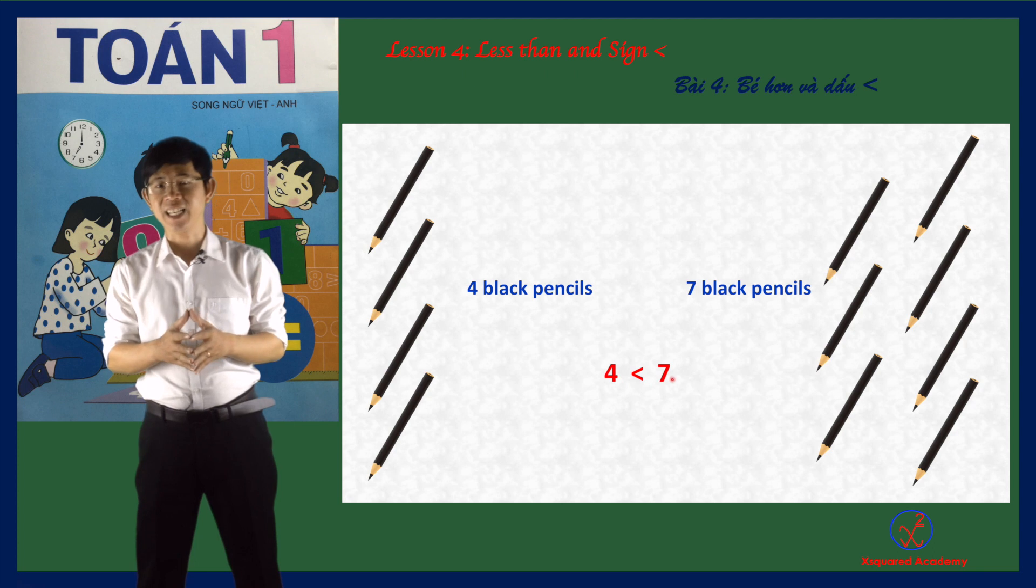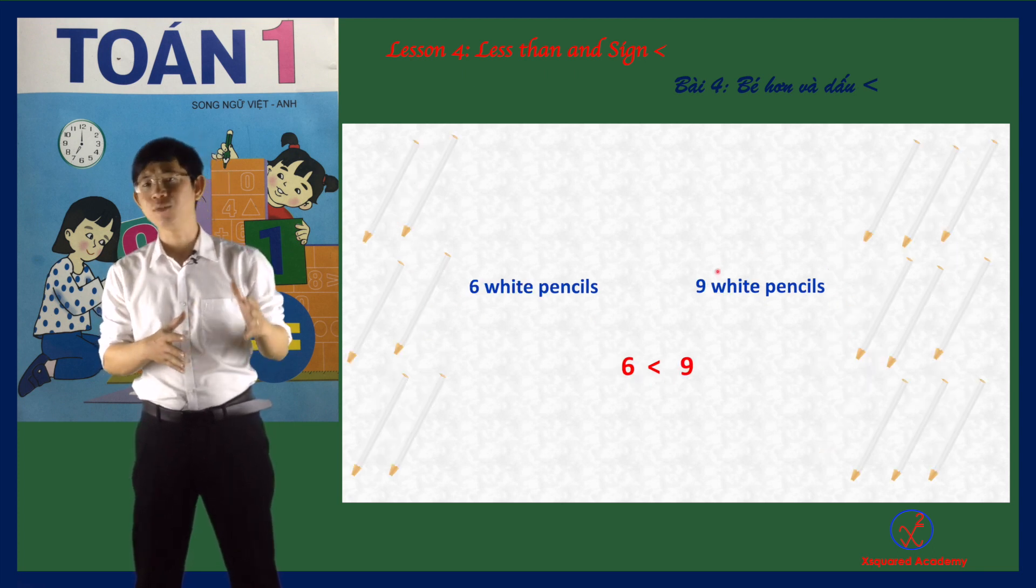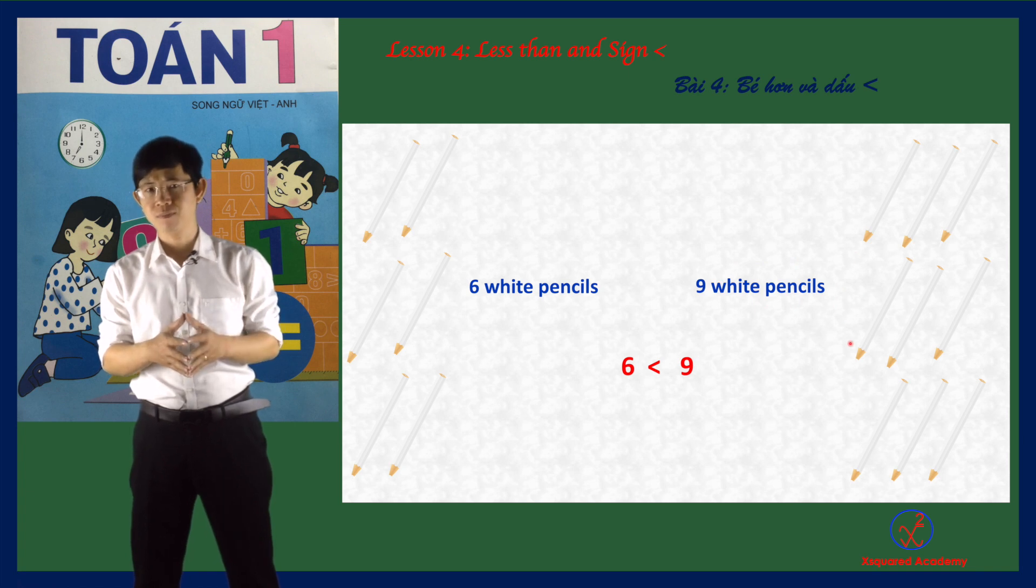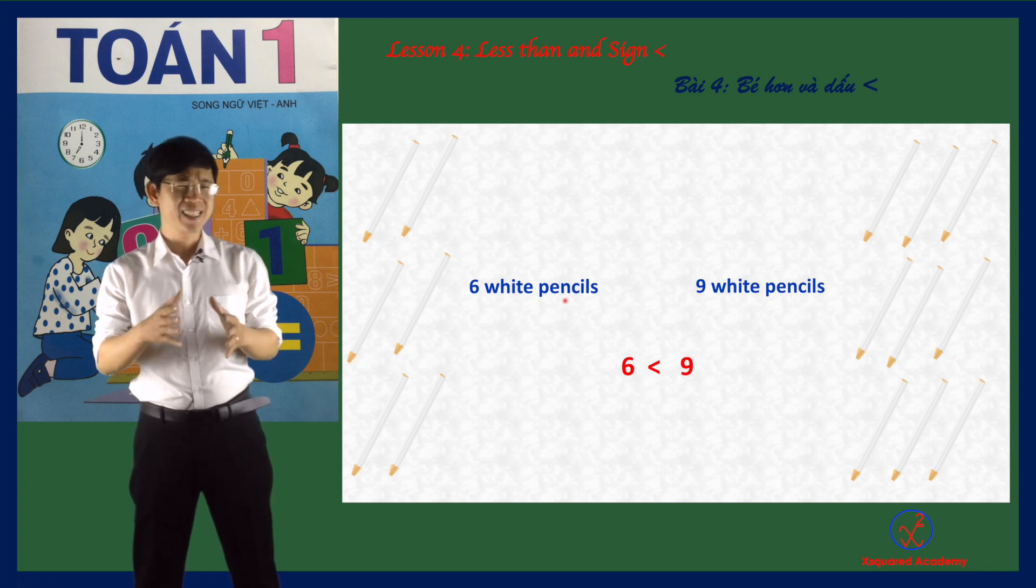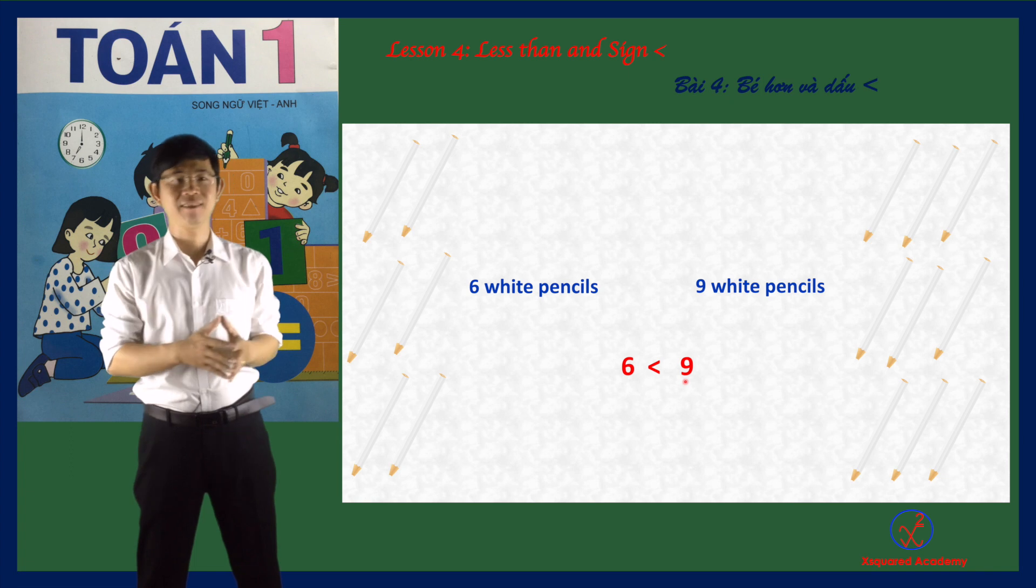Another exercise. Six white pencils and nine white pencils. Six is less than nine. So we write 6 < 9.